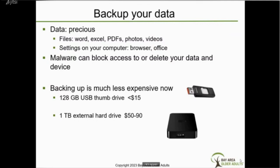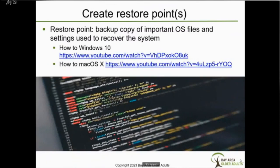I advise backing up on at least two drives because drives don't last forever — if one breaks down and a backup isn't available anymore, you have a second backup just in case. To back up your system — meaning your operating system and settings — if you lose that it's a big pain to set up again, especially things like Word and email settings in Outlook. I highly recommend creating restore points. A restore point is a backup copy of important operating system files and settings from a point in time when your computer was not compromised.